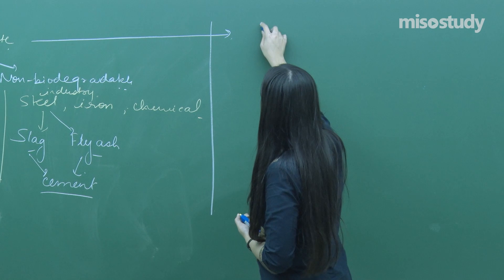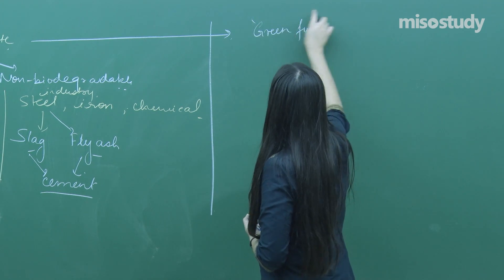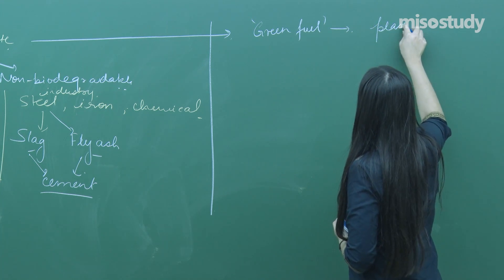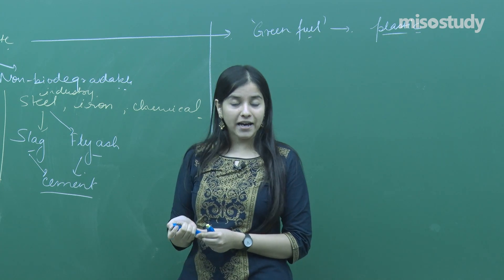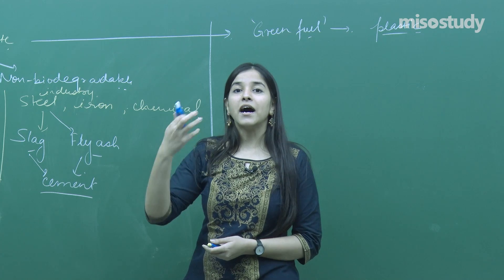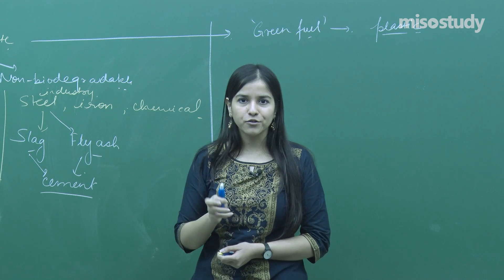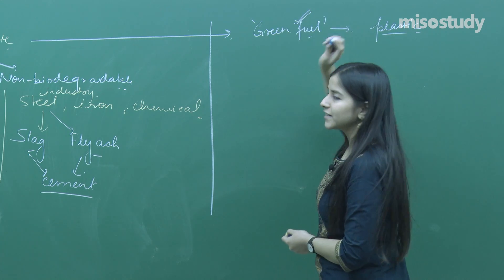One technique is green fuel. Green fuel is produced from plastic materials. That petrol is unleaded and has high octane number. Petrol with high octane number coming from plastic is known as green fuel.